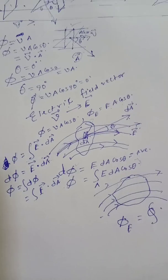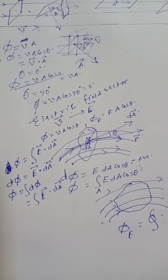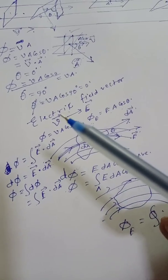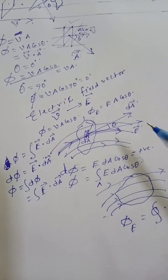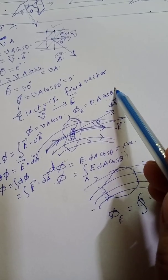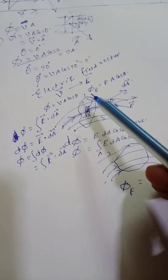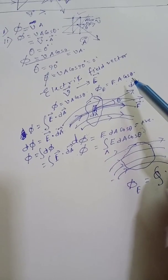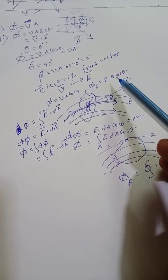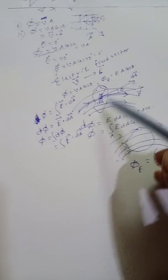This is about electric flux. Let us understand the different situations. If theta is equal to 0 degrees, then the electric flux is maximum. If it is 90 degrees, then electric flux is 0. And if theta is equal to 180 degrees, then electric flux is negative.